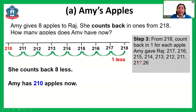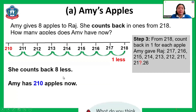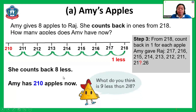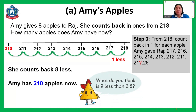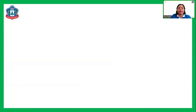She counts back eight, so Emmy now has 210 apples. What is nine less than 218? We simply subtract nine from 218 to get 209. Share your answer during our class.